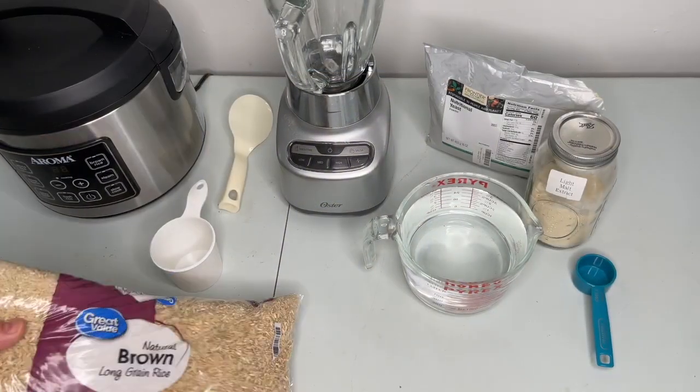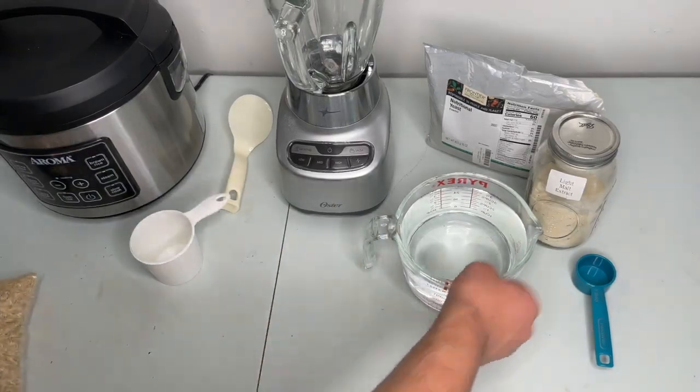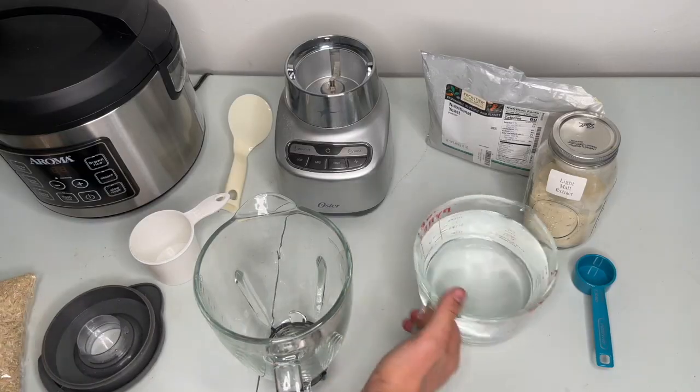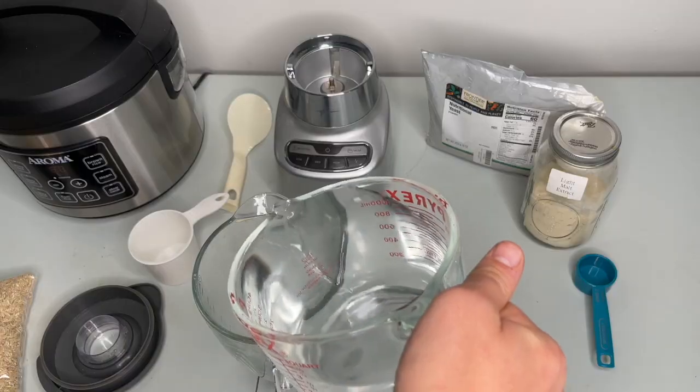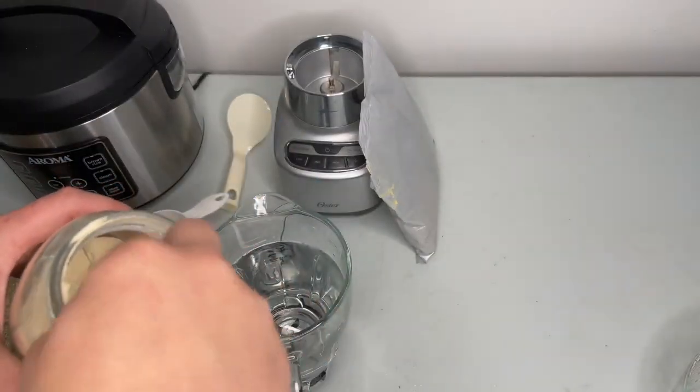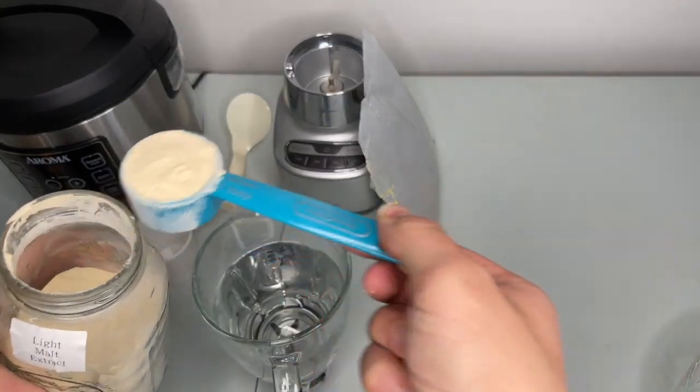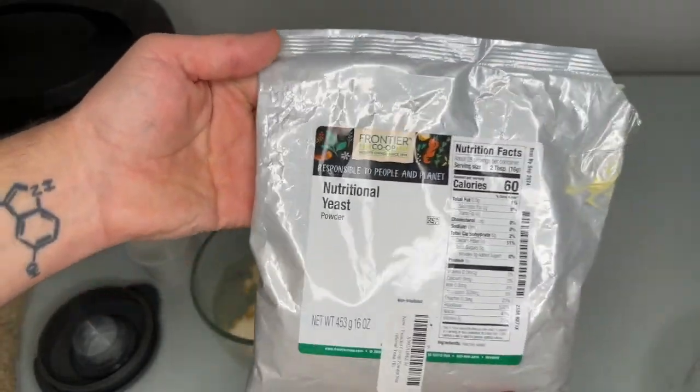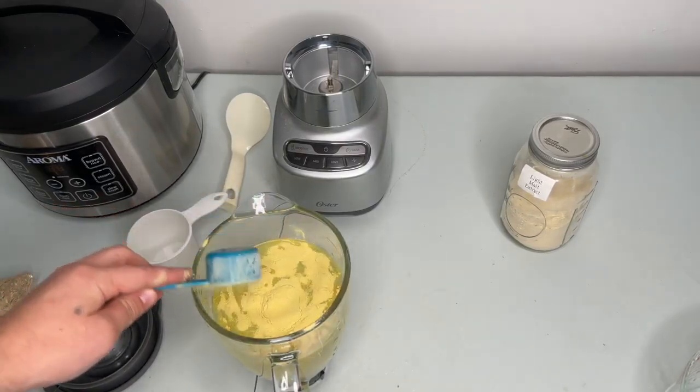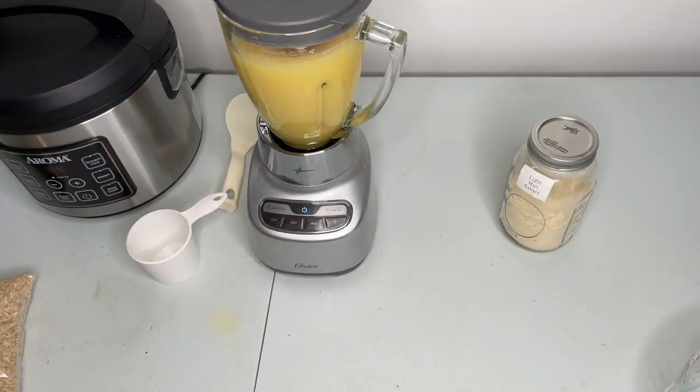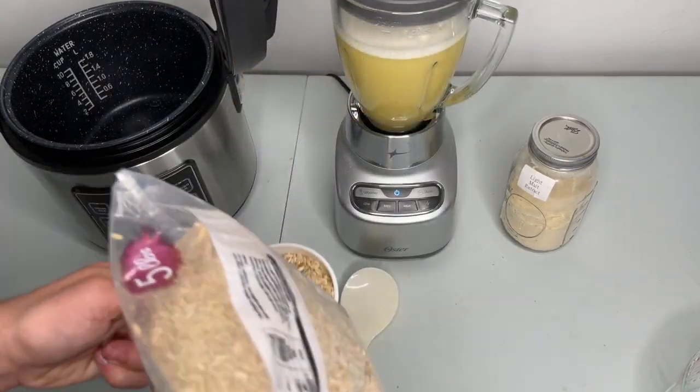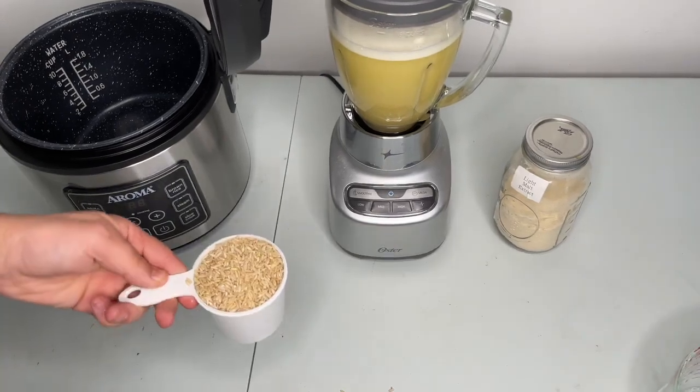Once the liquid culture is ready to be used you can start making the substrate and broth. Start by blending together one liter of water, two tablespoons of light malt extract, and two tablespoons of yeast extract. Add five cups of brown rice and the broth to an instant rice cooker and use the brown rice function.